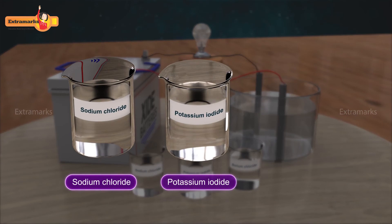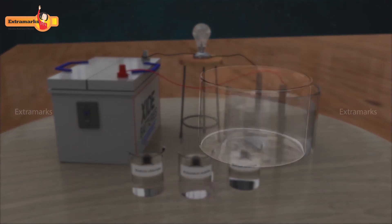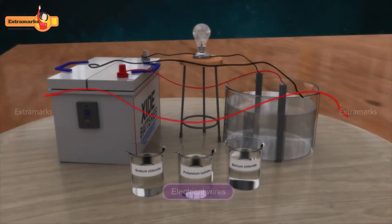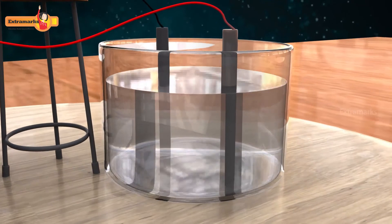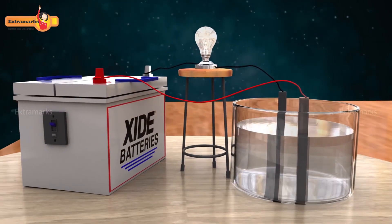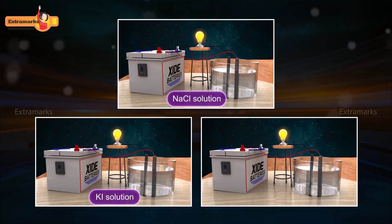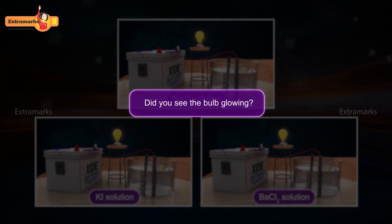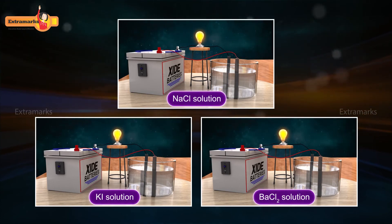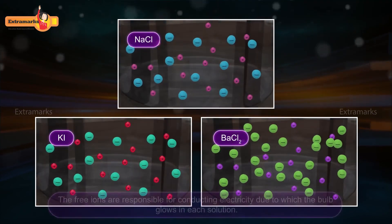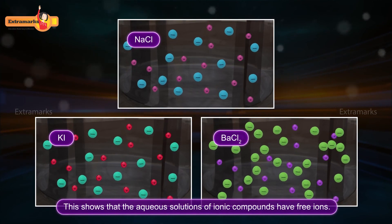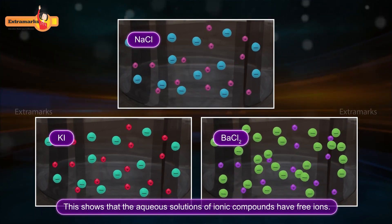To understand this, we assemble an electrolytic cell using a beaker and connect carbon electrodes to the positive and negative terminals of the cell. We dip the electrodes in a sodium chloride solution, then repeat the same procedure with potassium iodide solution and barium chloride solution. The bulb glows in all three solutions. On dissolving sodium chloride, potassium iodide, and barium chloride in water, free ions are formed. These free ions are responsible for conducting electricity, which causes the bulb to glow.